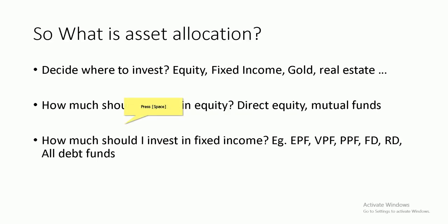So what is asset allocation? First, we need to decide where to invest — that is, which asset classes we should choose for investing: equity, fixed income, gold, real estate, and so on. For most purposes, equity and fixed income is more than enough, so we will consider only that.